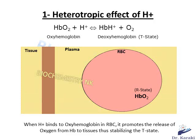Let's start with the heterotropic effect of the proton. You have to keep in mind that hemoglobin exists only in two conformations: a high-affinity R state and a low-affinity T state. When the partial pressure of oxygen is high, as in the lungs, the R state of hemoglobin is favored, allowing the maximum amount of oxygen to be bound to the hemes. In the capillaries, where oxygen concentration levels are lower, the T state of hemoglobin is favored in order to facilitate delivery of oxygen to the tissues.